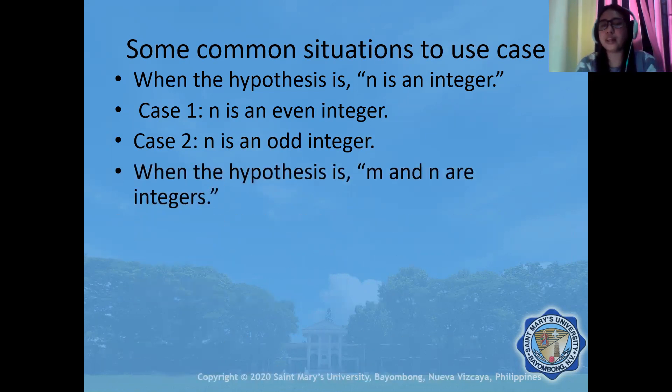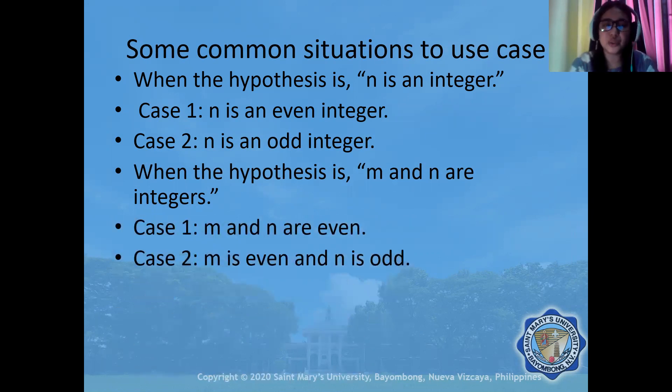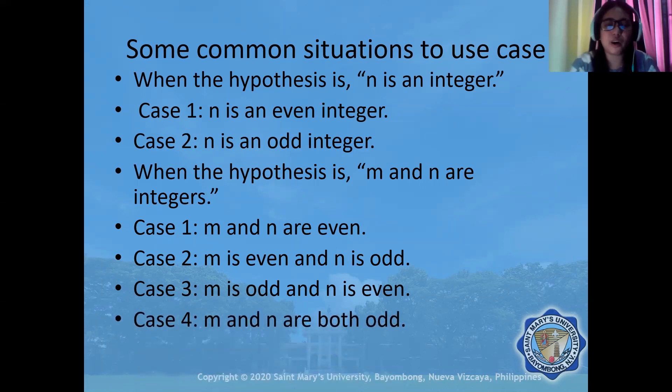Similarly, when the hypothesis is m and n are integers, and it is not indicated whether they are odd or even, we have to consider that m and n are even, or m is even and n is odd. Of course, we don't end there because we still have other possible cases like m is odd and n is even, or m and n are both odd. So we have cases one, two, three, and four.